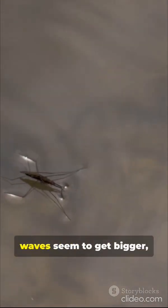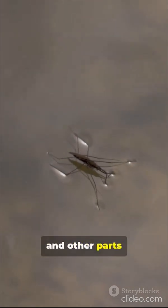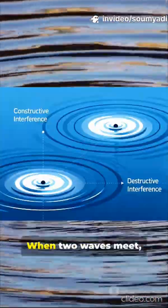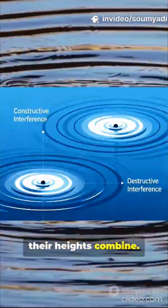Hey Arian, look at these waves from the rocks. Some parts the waves seem to get bigger, and other parts they almost cancel out. What's going on? That's wave interference, Arjun. When two waves meet, their heights combine.